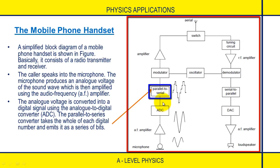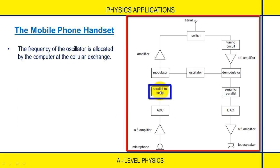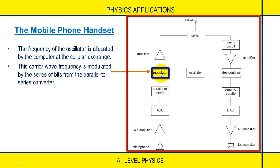Next, the parallel to series converter takes each digital number from the ADC and emits it as a series of bits. The frequency of the oscillator is allocated by the computer at the cellular exchange — this carrier frequency is needed to carry the information signal. The carrier wave frequency is then modulated by the series of bits from the parallel to series converter.